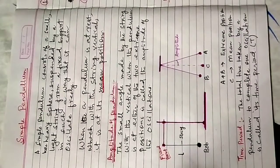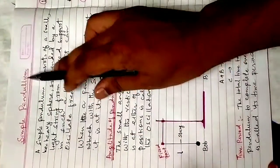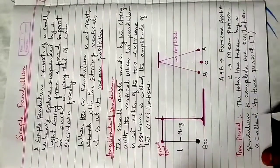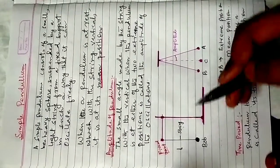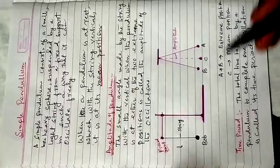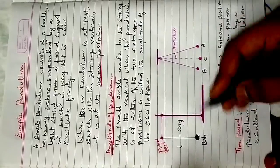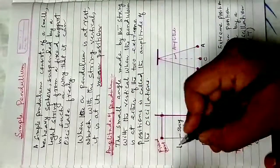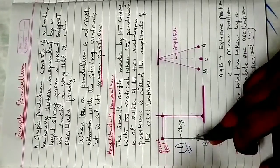As-salamu alaykum wa rahmatullahi wa barakatuhu. Today's topic is simple pendulum. Look at the figure. This is the stand. This is a fixed point and this is a string — maybe a thread or any light wire. And this is a bob, an iron ball or any brass ball. This ball is called bob. The length of the string is denoted as L. This is called a pendulum.